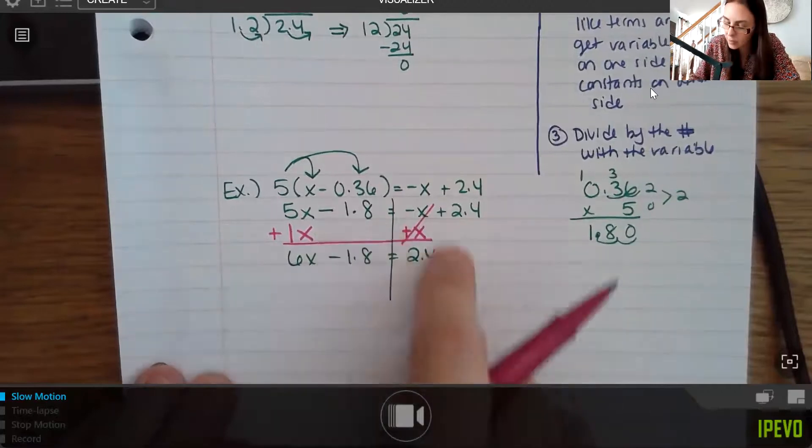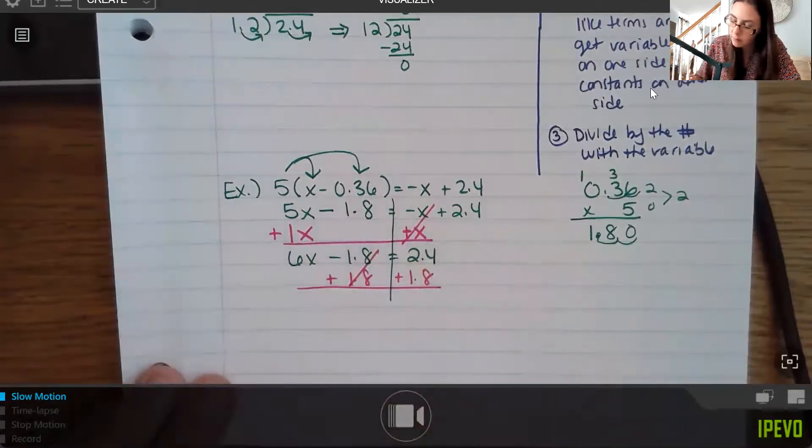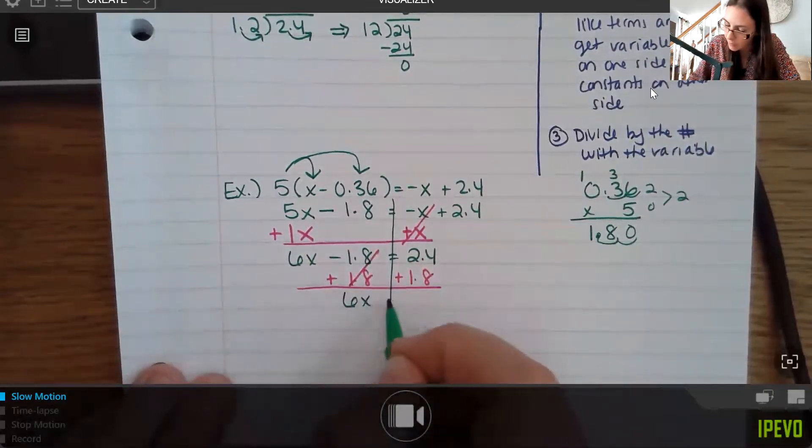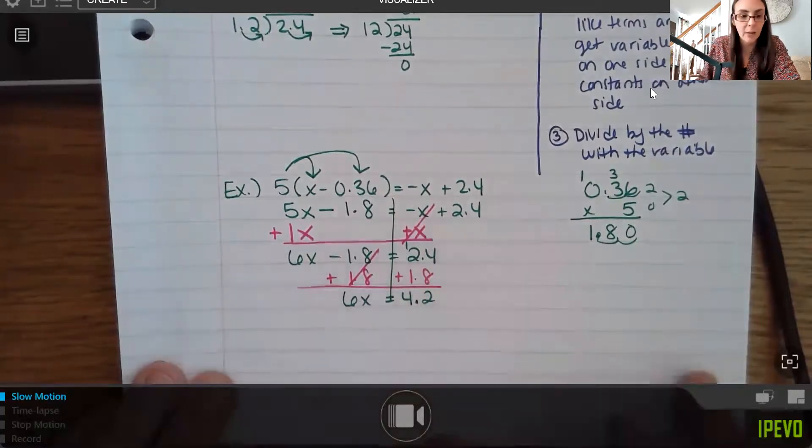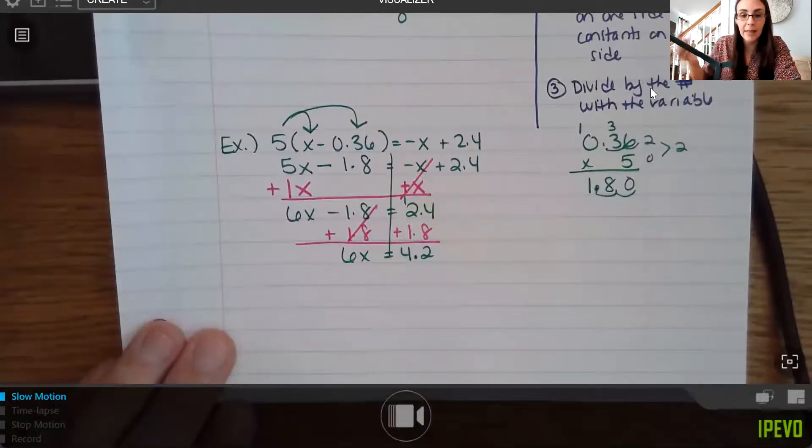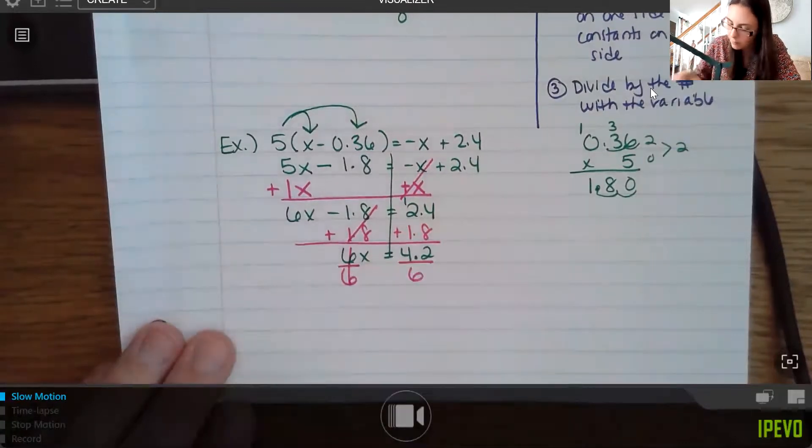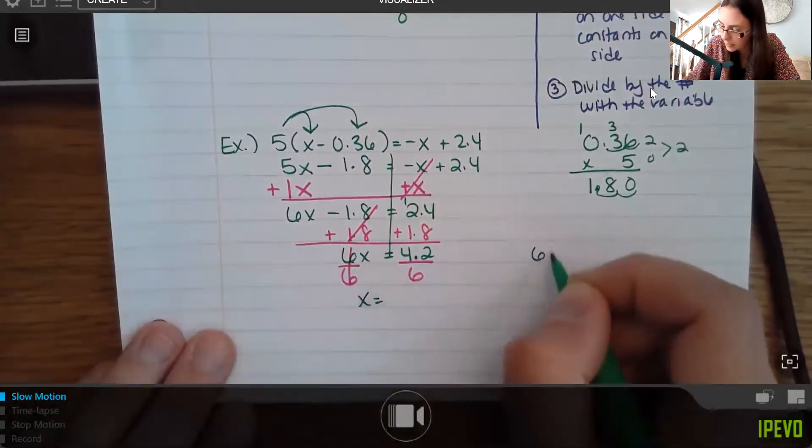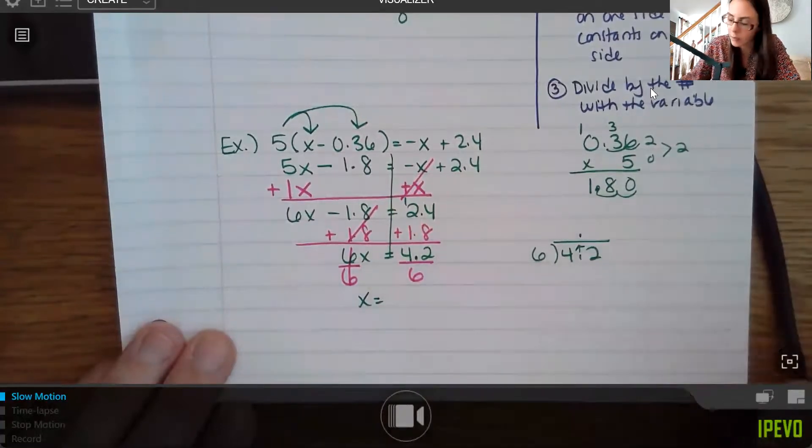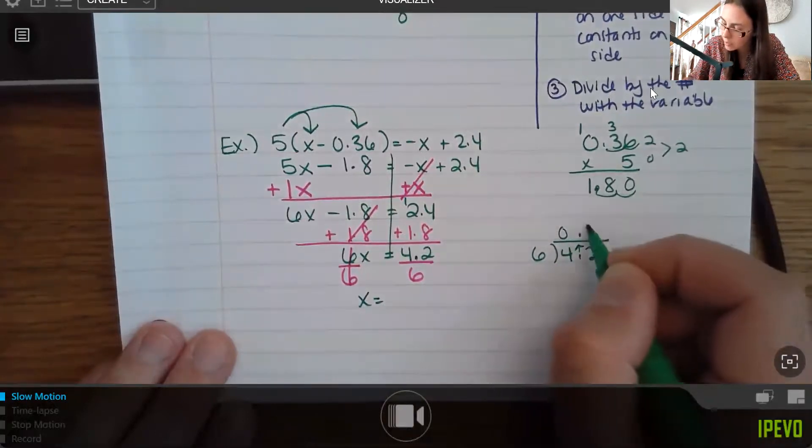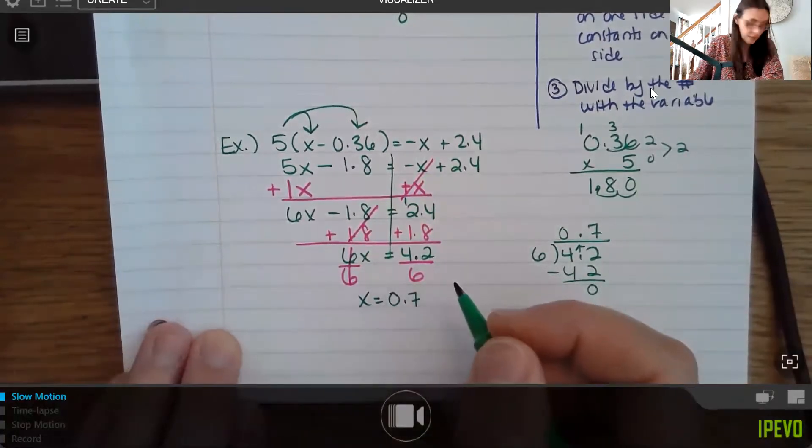So here I have 6x minus 1.8 equals 2.4. And now I want to get my numbers on the right. So I'm going to change from subtraction to addition as I bring that to the other side. All right, let's see. 8 plus 4 is 12, so carry the 1. Here I have 4, and the decimal point comes straight down. Now everything is combined, so my last of this is divides. I'm going to divide both sides by 6 here. And again, you may have to go ahead and do up that long division. If you're pretty good with your multiplication tables here, you may notice the answer is 0.7 right away. But if not, that's okay. Take your time. And you will see that the answer is 0.7 in this case.